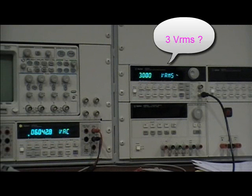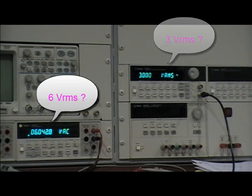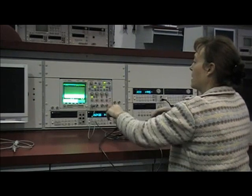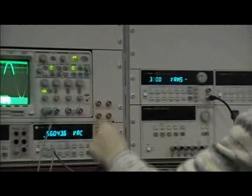3 volts like the display or 6 volts like the DMM reads? To understand this, let's go ahead and connect the scope also. So we'll connect the scope in parallel with the function generator and the DMM.